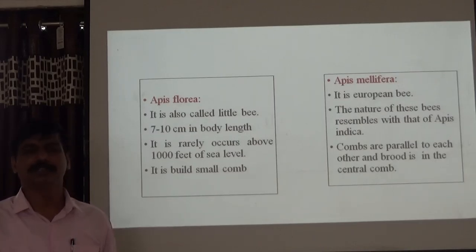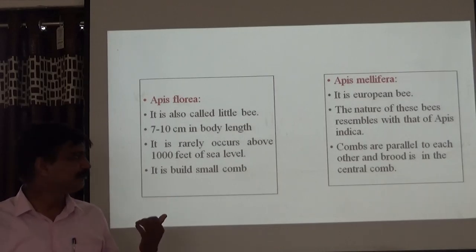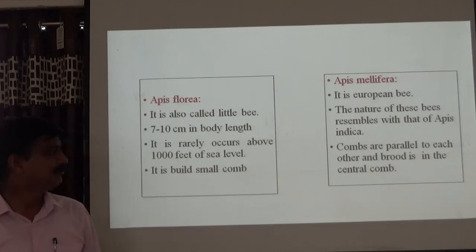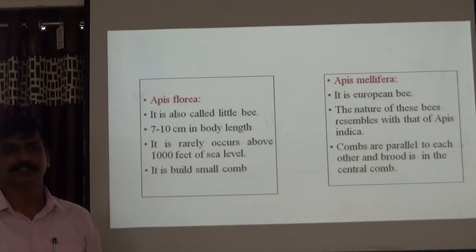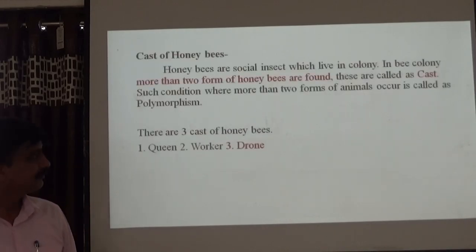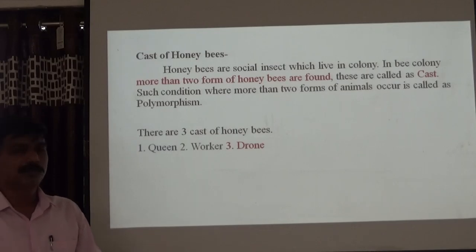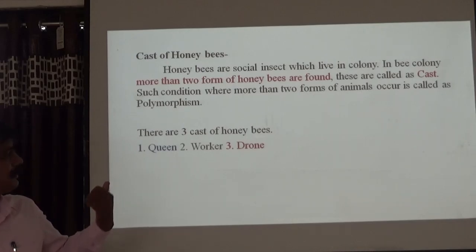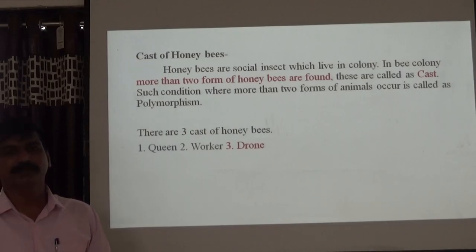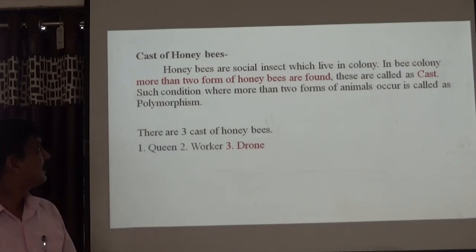Apis mellifera — these are found in European countries. It is similar in appearance to Apis indica. Combs are parallel to each other, with brood (eggs) present in the center part of the comb. Tasks of the honeybee: in each colony there are three types of castes.